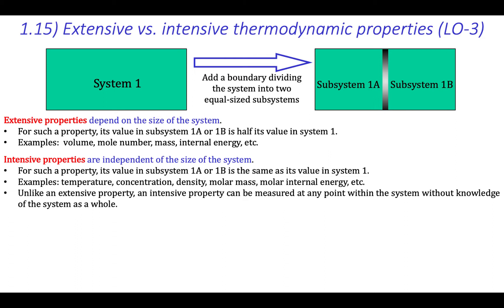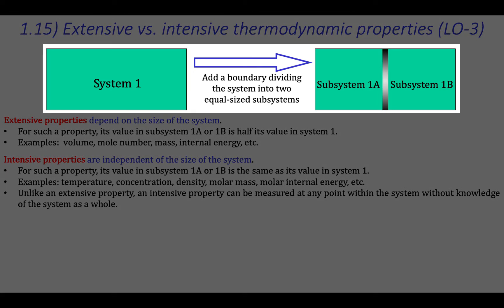A good way to determine if a property is extensive or intensive is to think about what happens to that property when we add a boundary that divides a system into smaller subsystems. In this example, we've divided System 1 into subsystems 1a and 1b, which are of equal size.